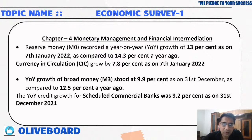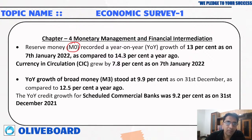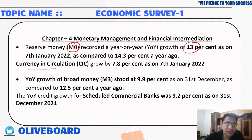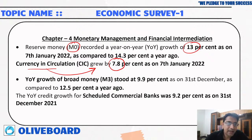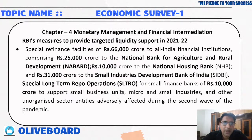Chapter 4 is on monetary management and financial intermediation. As on 7th January 2022, reserve money M0 recorded a growth of 13 percent. Currency in circulation grew by 7.8 percent. Year-on-year growth of broad money M3 stood at 9.9 percent.